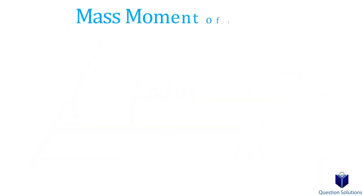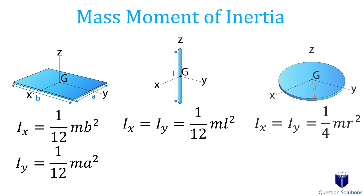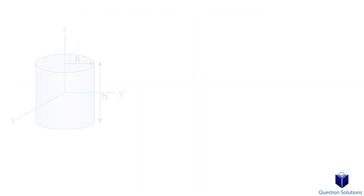You should keep in mind these three equations. The first tells us how to find the mass moment of inertia for a rectangular plate, the second for a slender rod, and the third for a circular disk. With these three equations, we can find the mass moment of inertia for composite bodies. All of this will make more sense with examples, so let's get started.